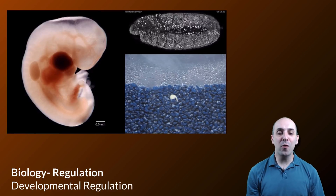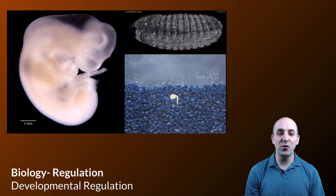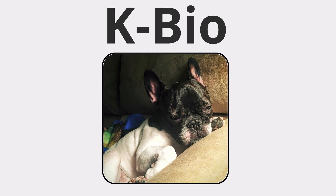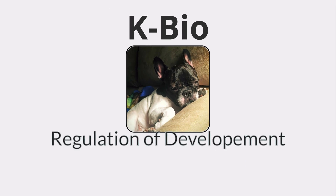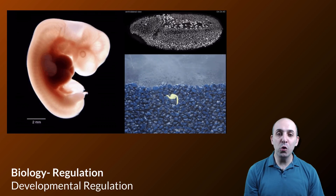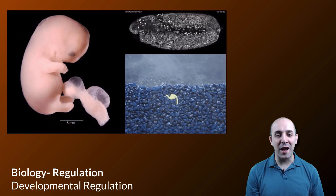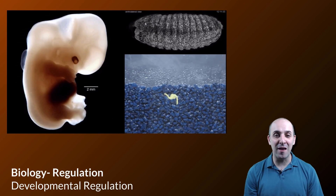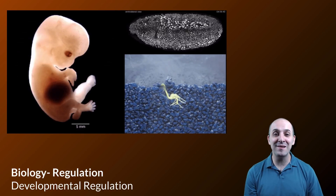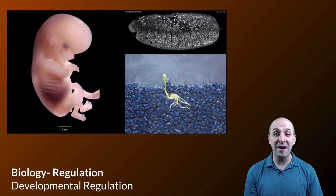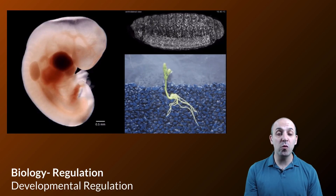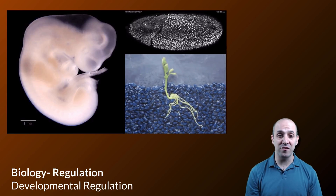Hi, and welcome to our video on the regulation of development in multicellular organisms. Whether we're a human, a fruit fly, or a plant, we need to develop from a single cell into a multicellular organism. And that process needs to be tightly controlled and tightly regulated, at least if we want it to all work out okay. And that's what we're going to be looking at in this video.